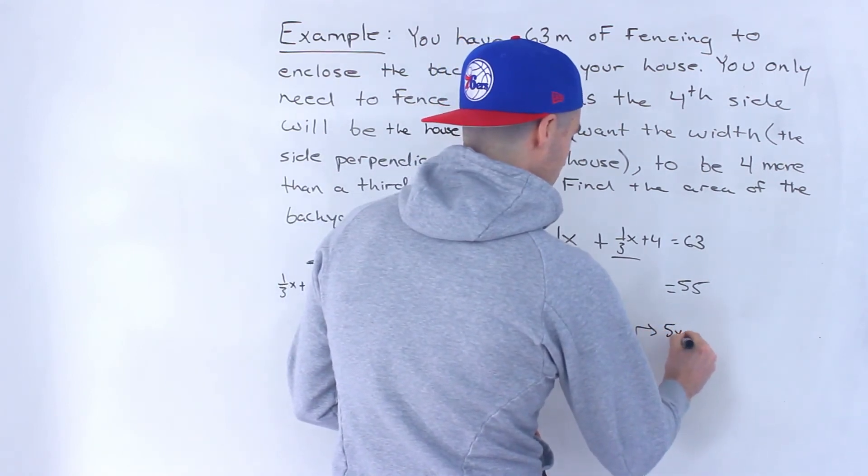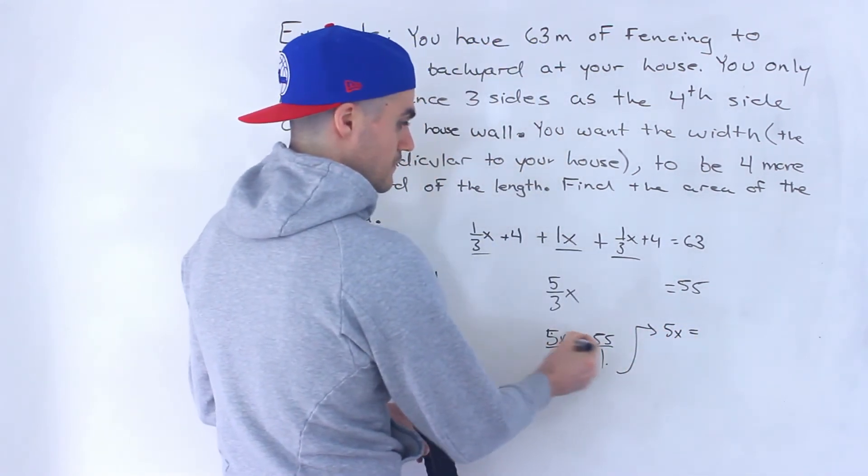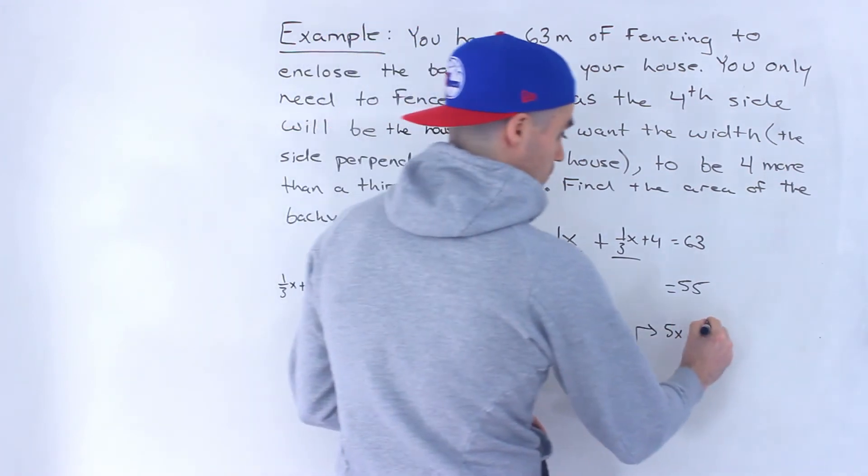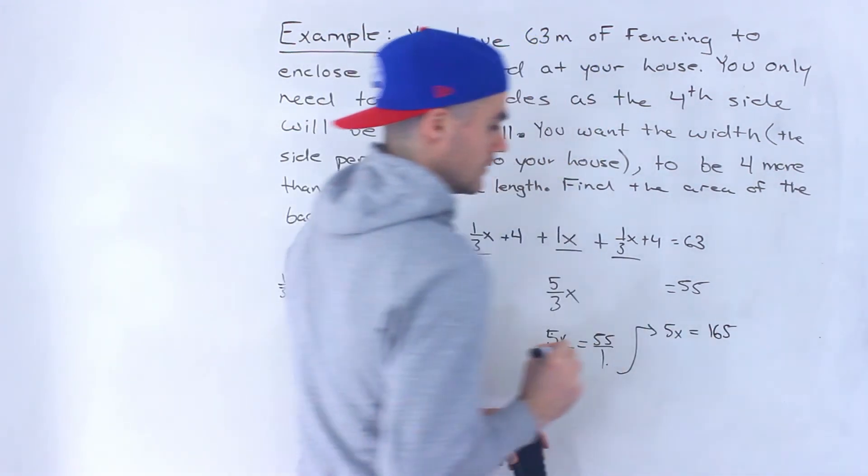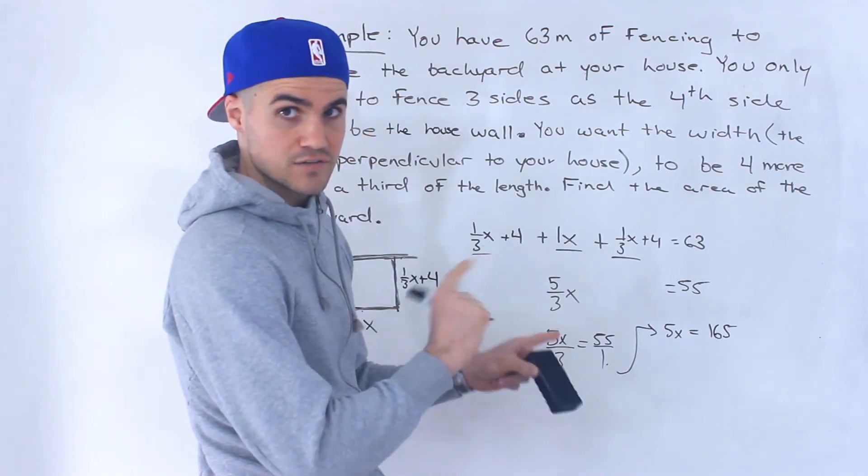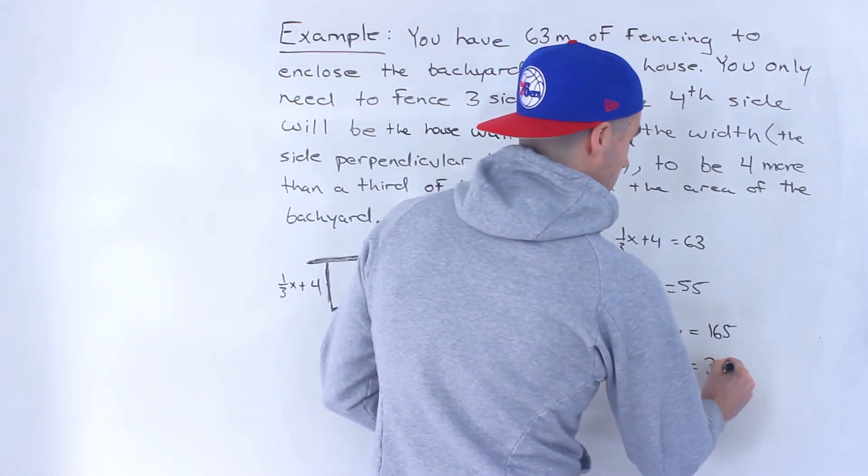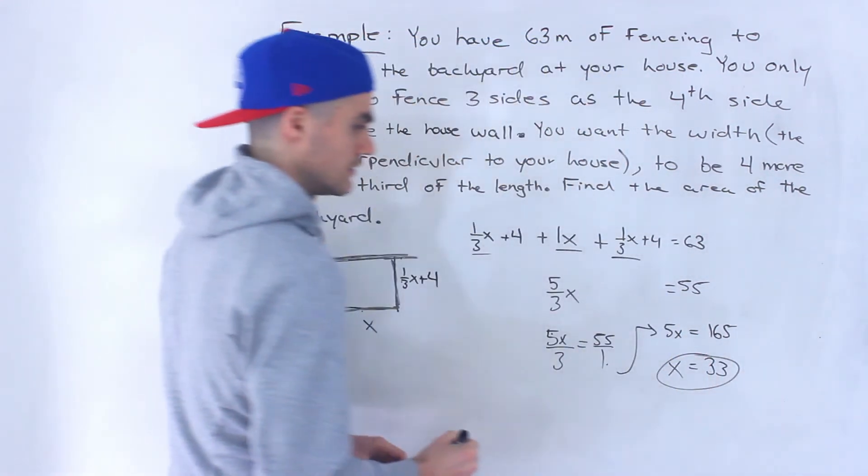So we'd end up with five x, one times five x is just five x, three times 55 gives us 165. And then just divide both sides by five, get the x by itself. So x would end up being 33.